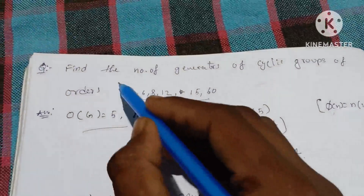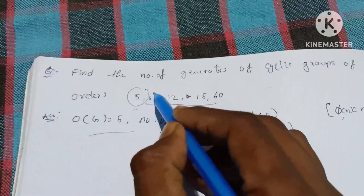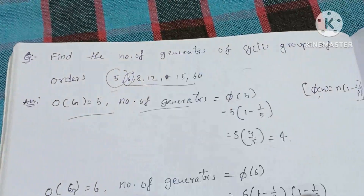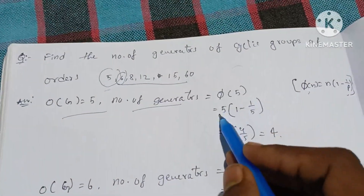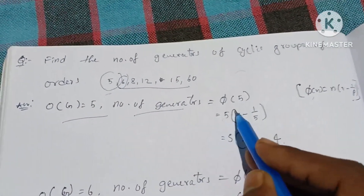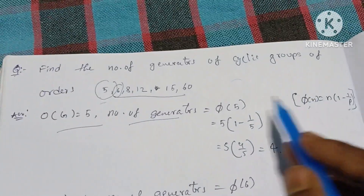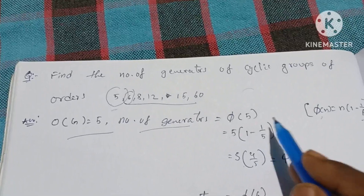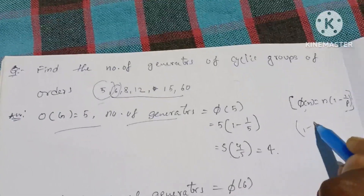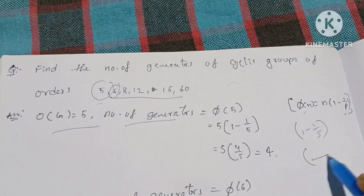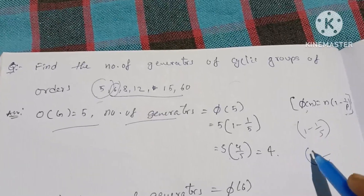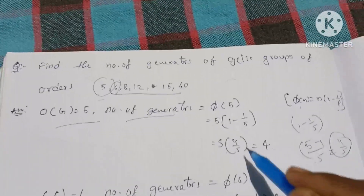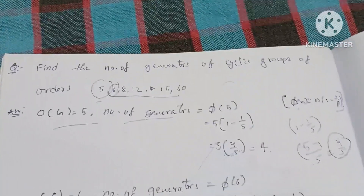Now we are going to show you these orders. First, the prime factors. 5 is the prime factor — directly 5. So φ(5) = N value of 5 into 1 minus 1 by P value of 5. That is 5 into 1 minus 1 by 5, which equals 5 into 4 by 5. The 5s cancel, giving equal to 4.